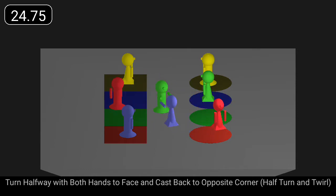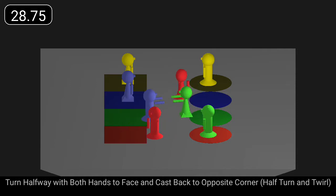First couple dance corners pass and turn, while corners turn halfway with both hands to face and cast back to opposite corner.